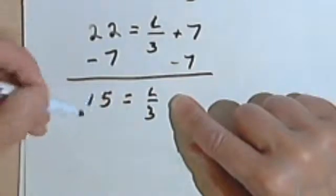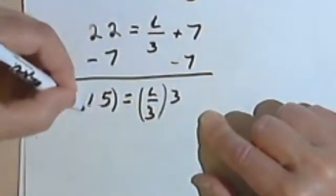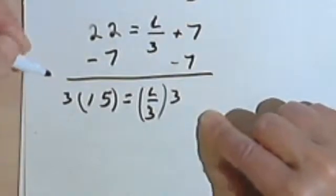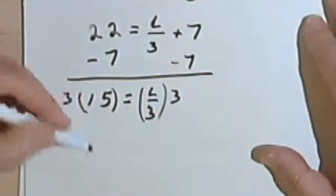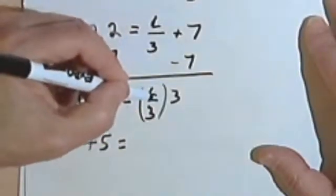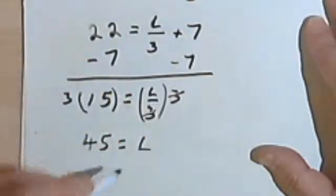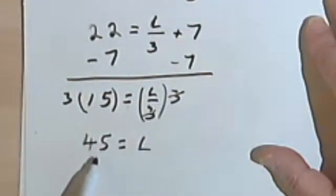I want to get the L by itself, so I'll multiply both sides of the equation by 3. So 3 times 15 is 45. And these 3s will cancel. And I get that the length is 45.